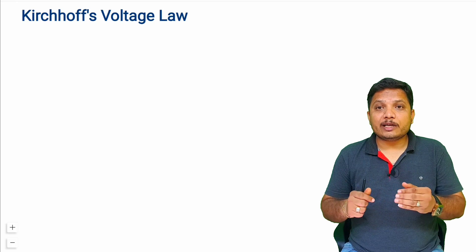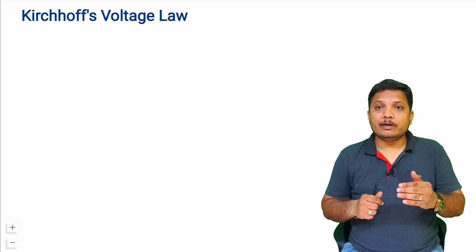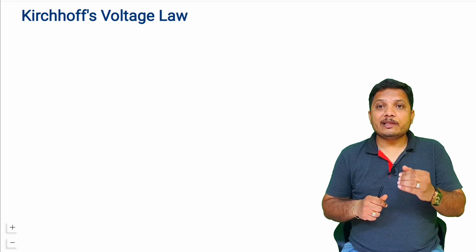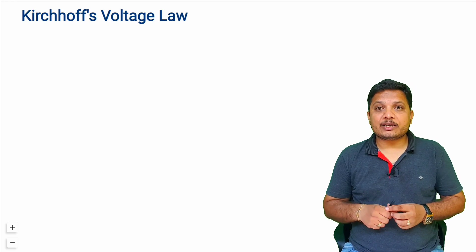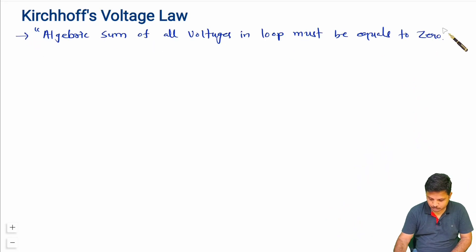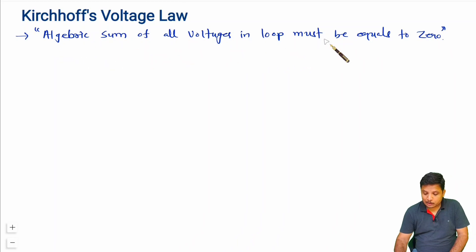Kirchhoff's voltage law states that the algebraic sum of all voltages in a loop must be equal to zero.